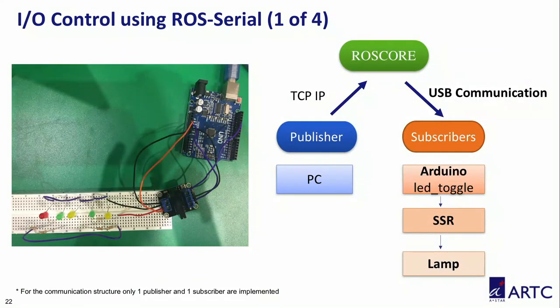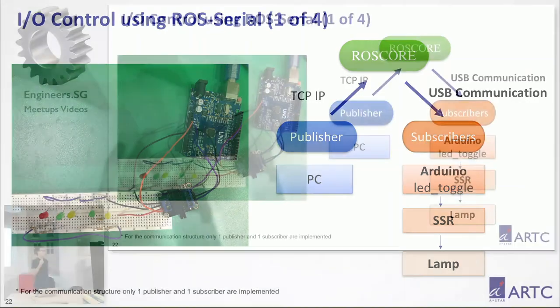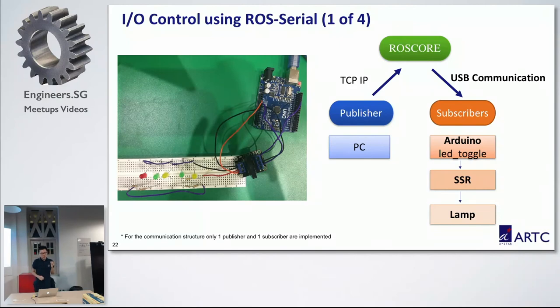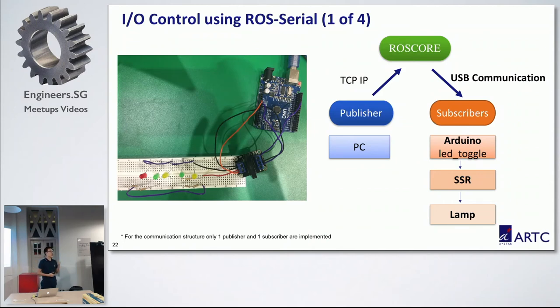Next, I would like to introduce IO control using ROS serial. For my project, ROS IO control is used to simulate that ROS can control the tool center point (TCP). A publish-and-subscribe communication mechanism was created over USB. The PC publishes a message — for example, to toggle an LED — and the subscriber, which is an Arduino, subscribes to the message.